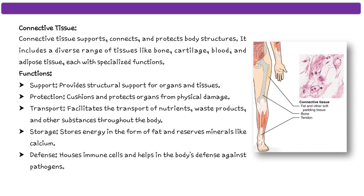Moving on, the next type of tissue is connective tissue. Connective tissue supports, connects, and protects body structures. It includes a diverse range of tissues like bone, cartilage, blood, and adipose tissues, each with specialized functions.